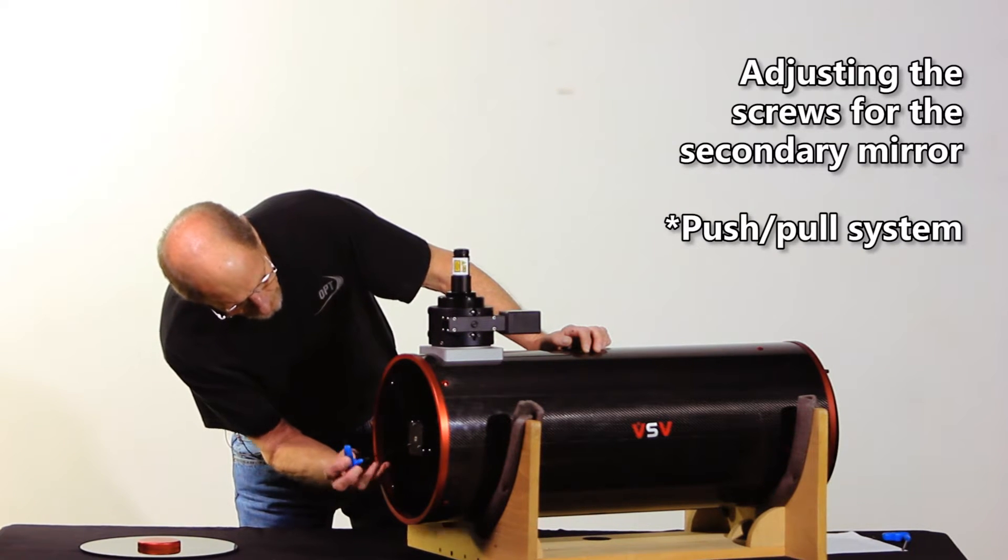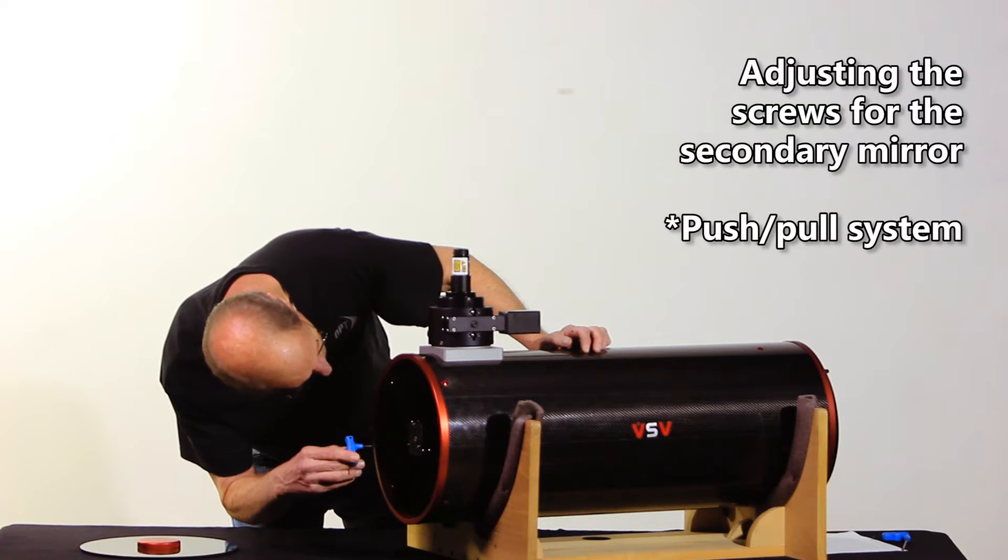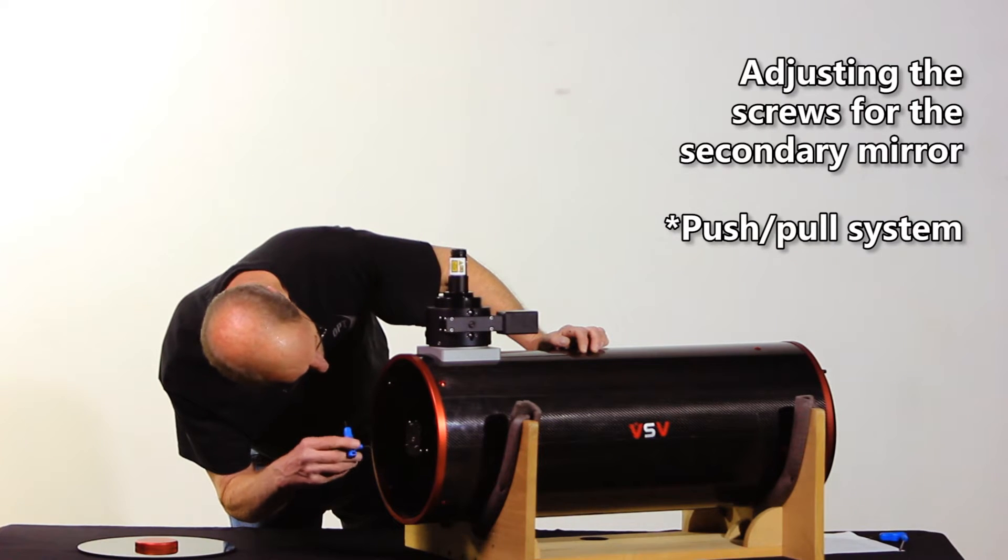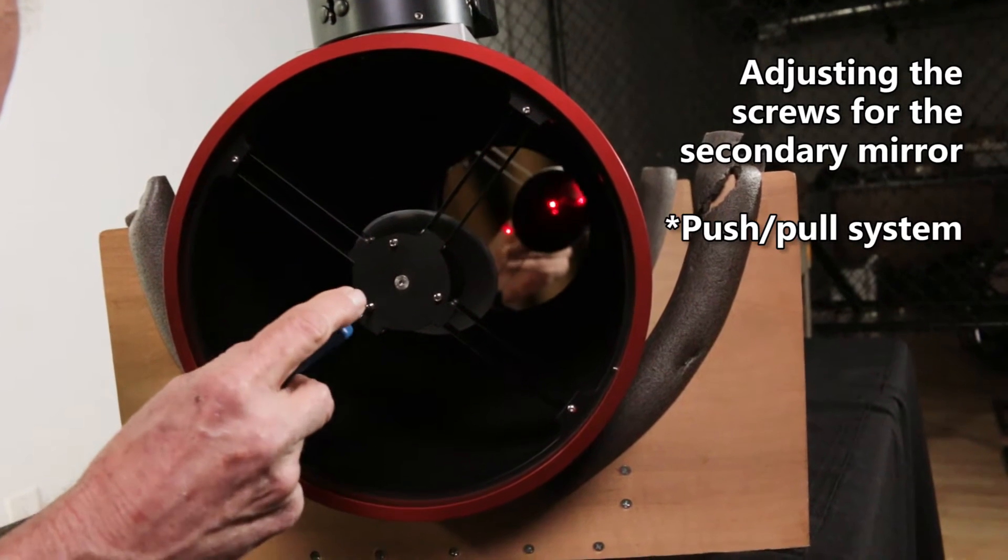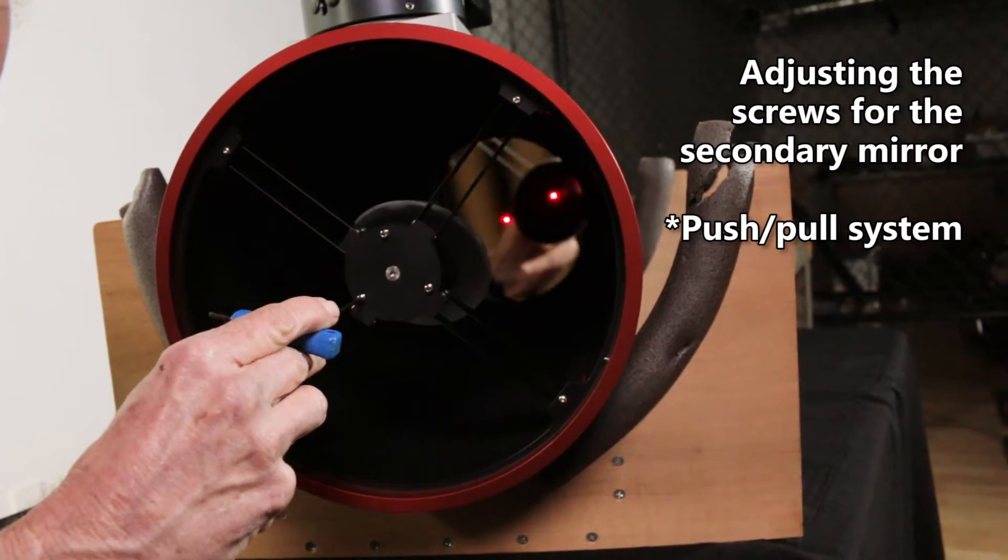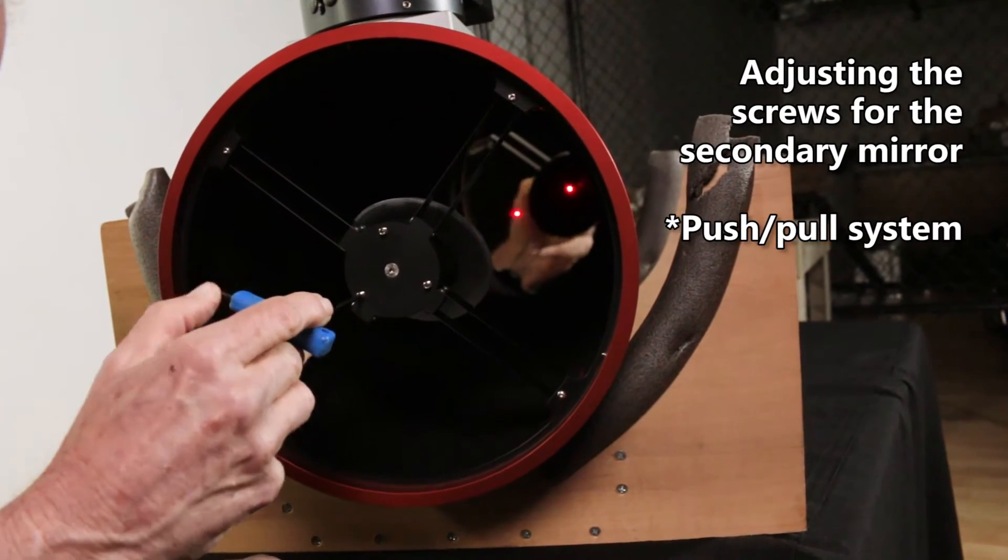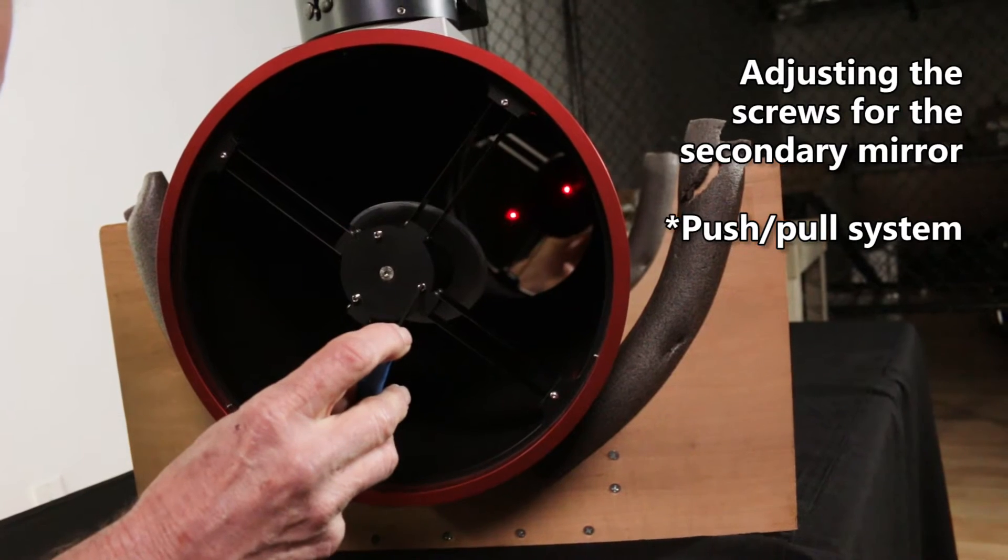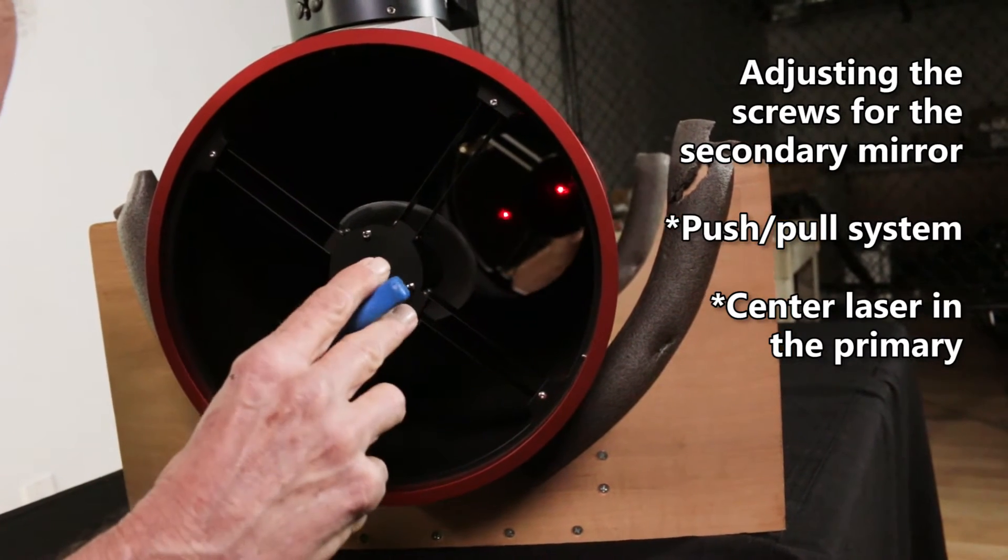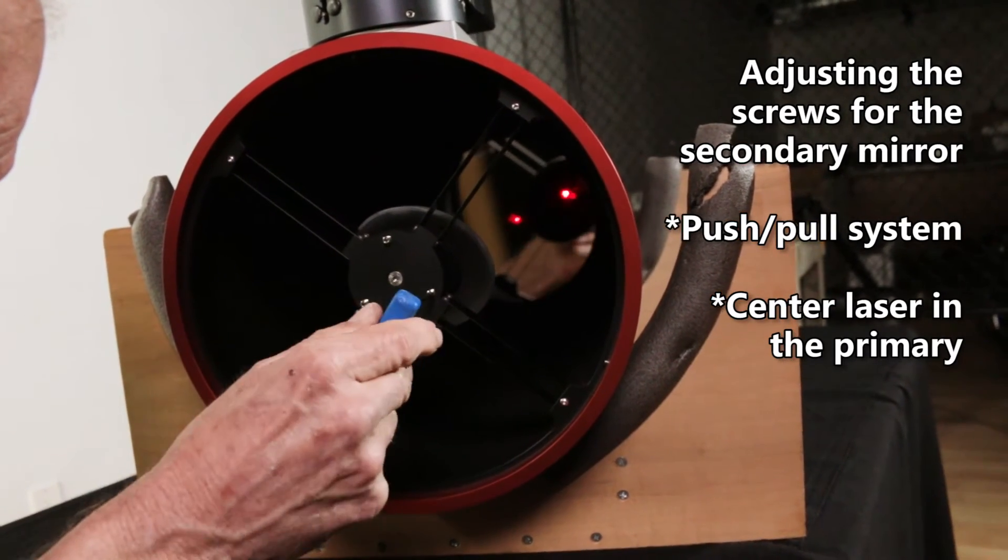So we're going to make some small adjustments here to move the laser back to the center mark point. The three axis movement takes you a little while to get kind of used to. You may back one out, loosen the other one, tighten the other ones until you actually center the laser right in the middle of the primary target on the primary.